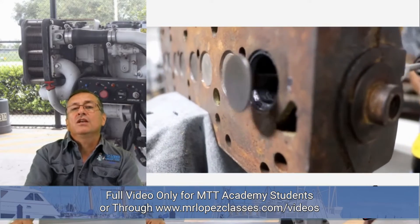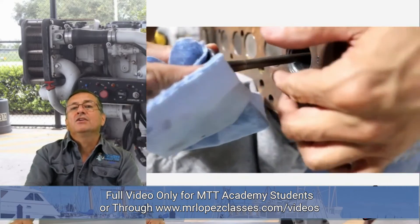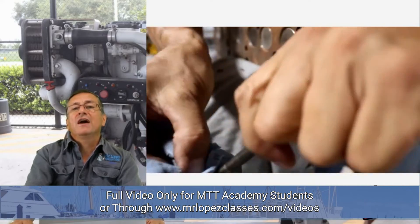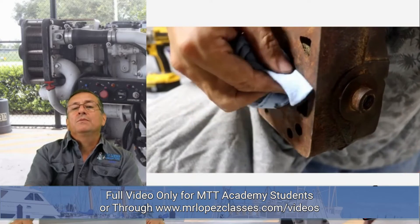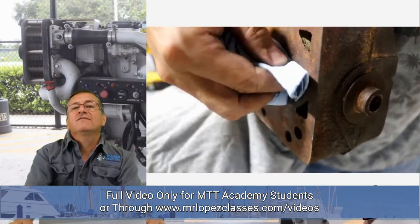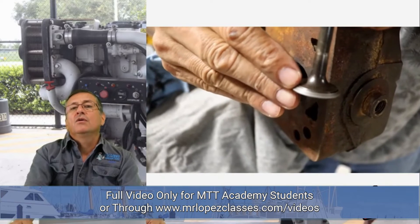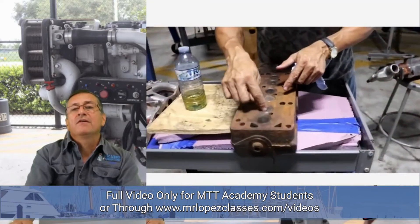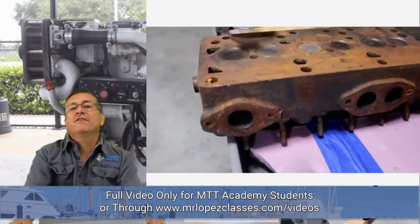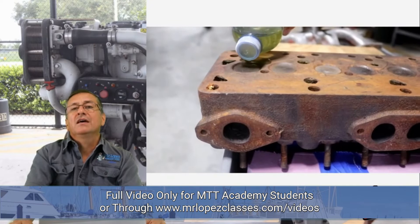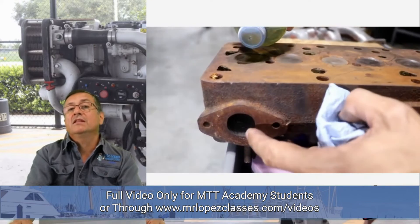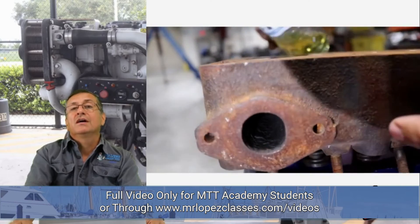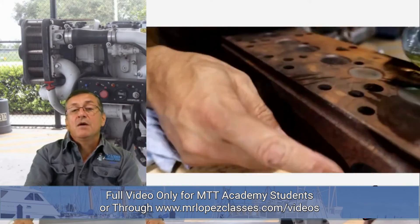Clean the valve periodically to verify its condition — to check if the seat of the valve is properly seated and if the face of the valve is clean and appropriate. Do that process with each valve. At the end, put the head face-up and apply gasoline in each cylinder to verify if the gasoline penetrates the valve and passes through the intake port or through the exhaust port. This is the process to verify if the job on the head is done correctly.